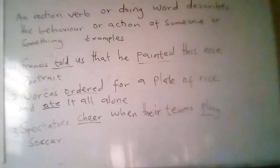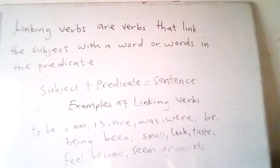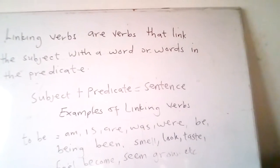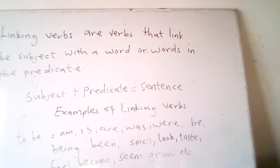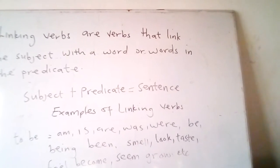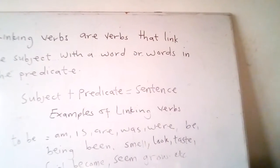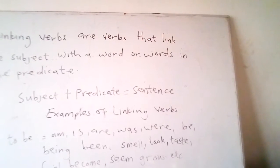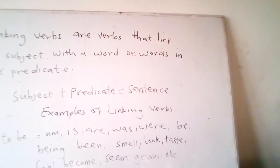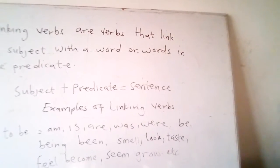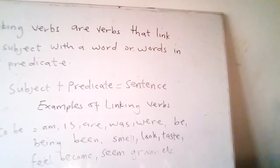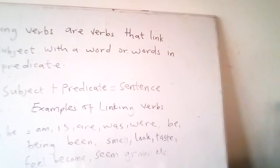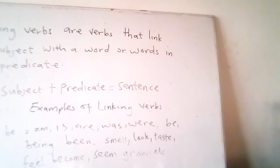Linking verbs are verbs that link the subject with a word or words in the predicate. Note that every sentence is made up of a subject and a predicate: subject plus predicate equals a sentence. Linking verbs usually do not express action; they link or connect the subject to another noun or adjective in the predicate, which makes them intransitive verbs.